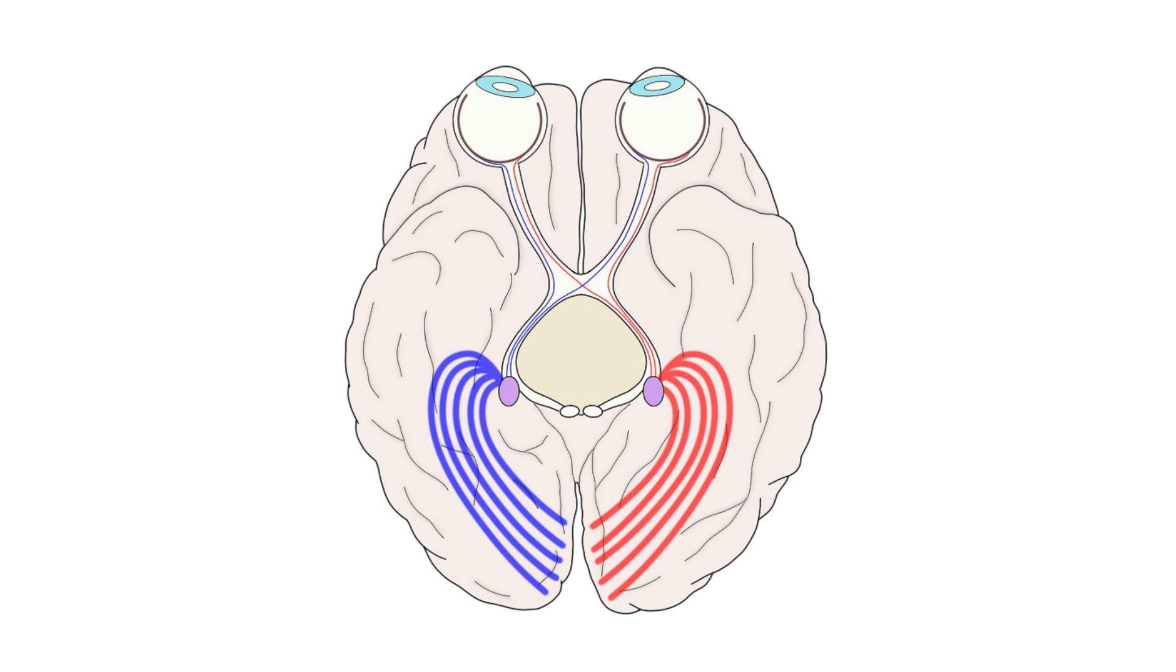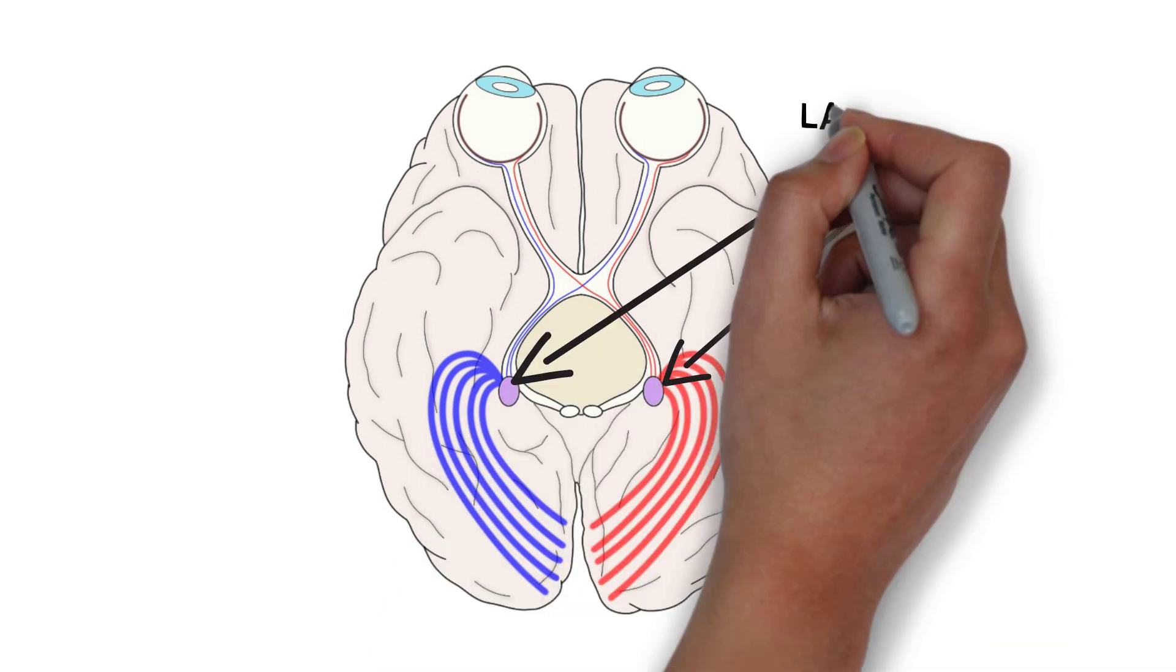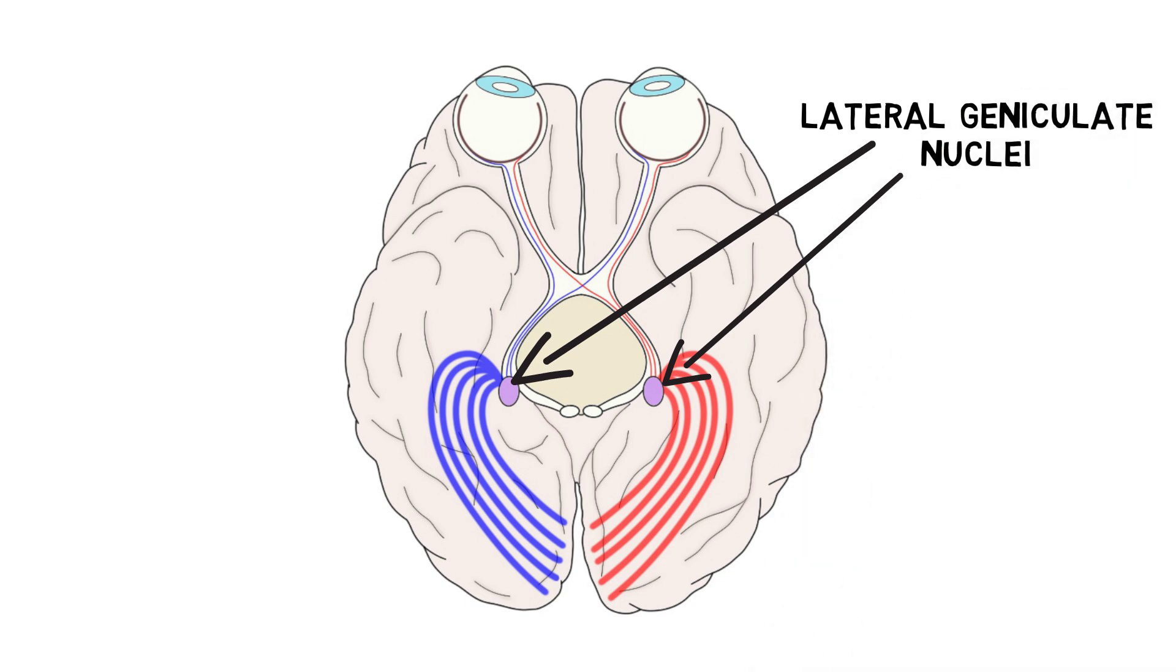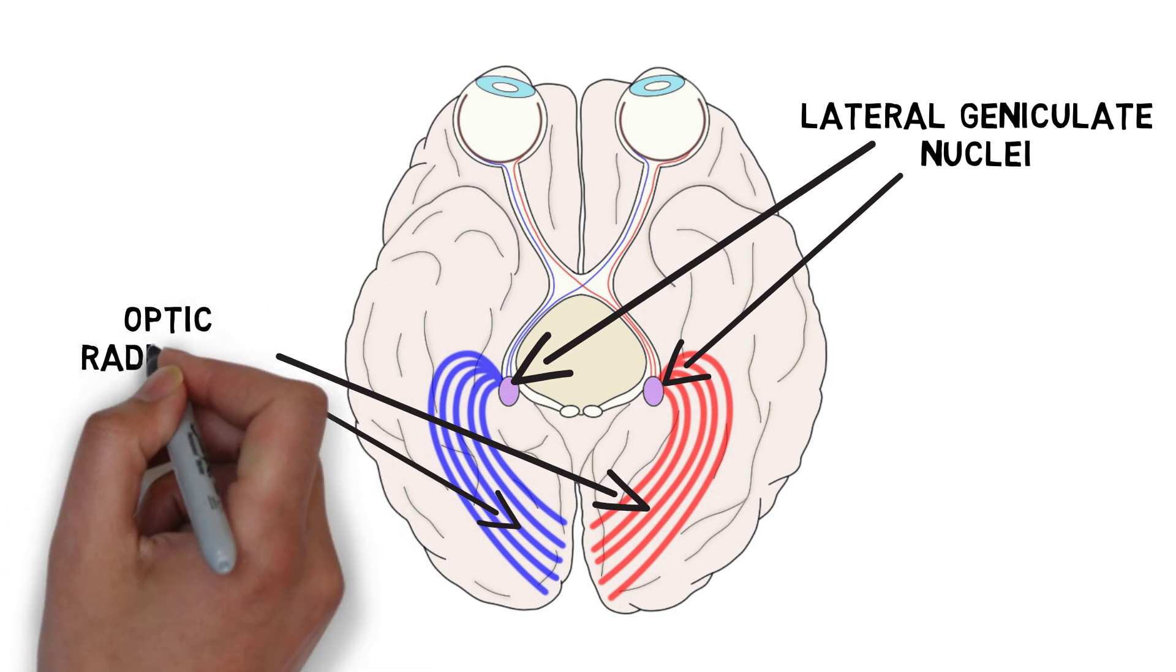Most of the visual information that leaves the retina is sent to a nucleus in the thalamus called the lateral geniculate nucleus. From there, it is sent back to the primary visual cortex via large bundles of axons called the optic radiations.